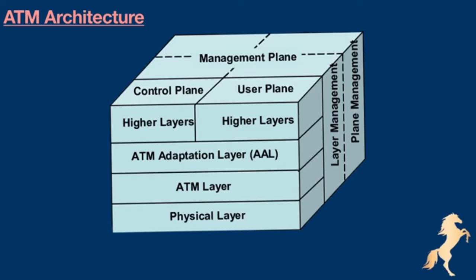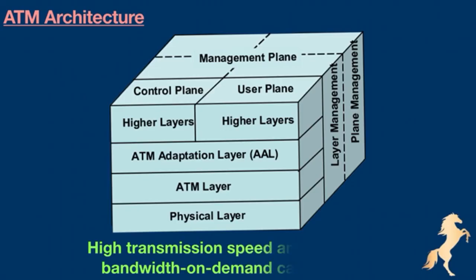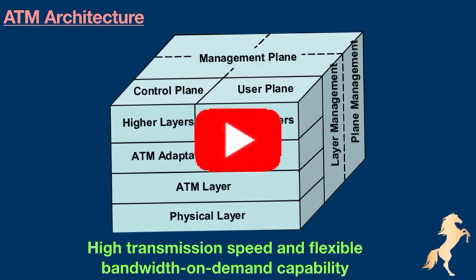Two main benefits of ATM network: high transmission speed and flexible bandwidth on demand capability. Coming to an end, the bottom line is ATM networks are meant to support both telephone network and internet. They can handle both constant rate traffic and variable rate traffic. So this is all about today's video. Thanks for watching, please subscribe, see you in the next video.